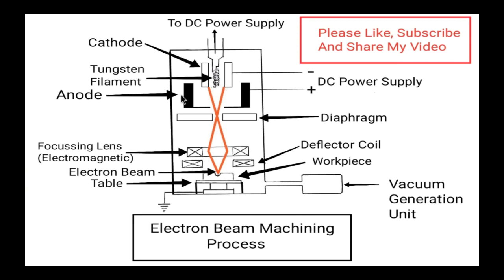From this well-illustrated diagram, let us discuss the construction of the electron beam machine. It consists of an electron gun, vacuum chamber, DC power supply, and vacuum generation unit. Inside the vacuum chamber there is the electron gun, workpiece, and work table. The electron gun consists of a tungsten filament, cathode, anode, diaphragm, focusing lens, and deflector coil.